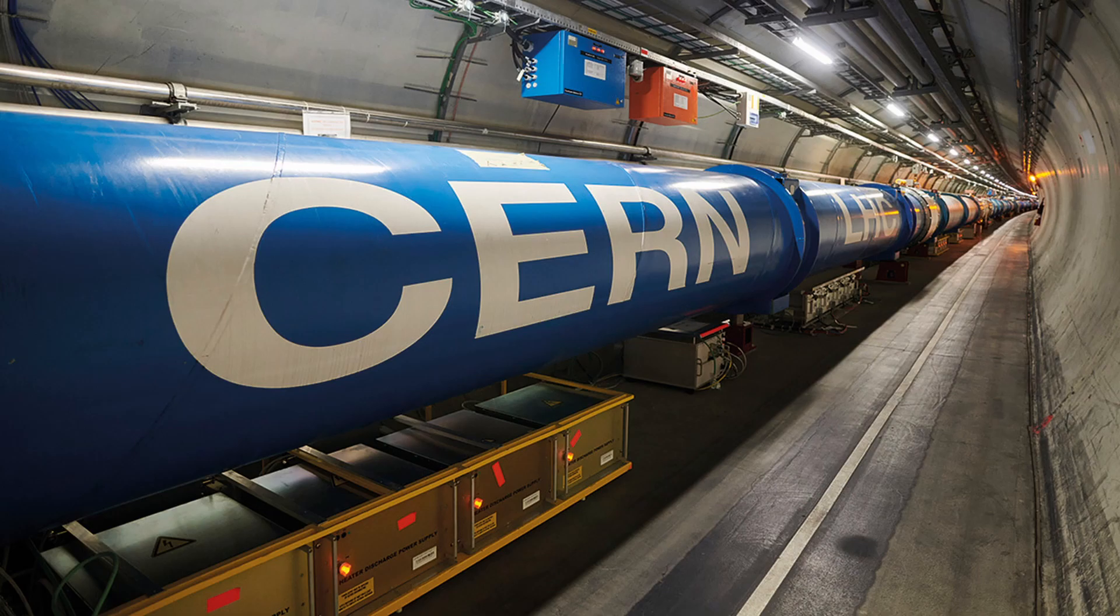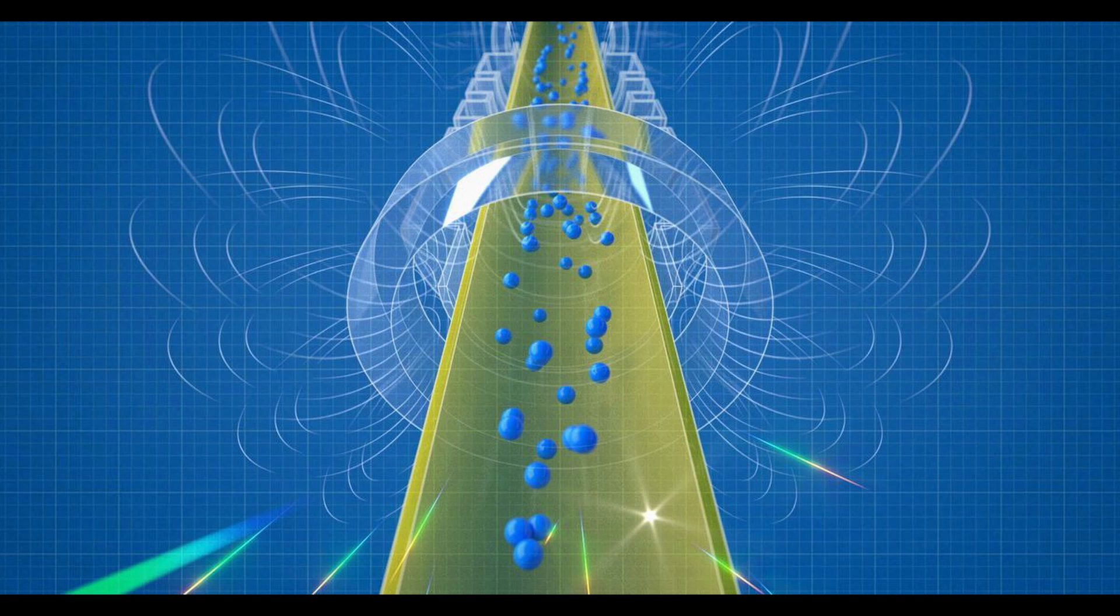At CERN, a team of scientists conducted an extraordinary experiment. They designed a magnetic bottle, alpha-G, to hold antimatter.